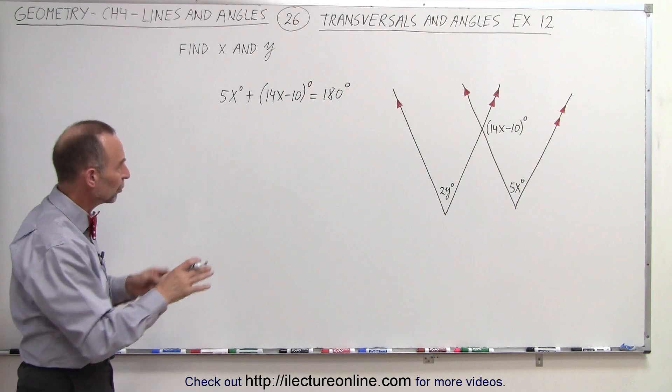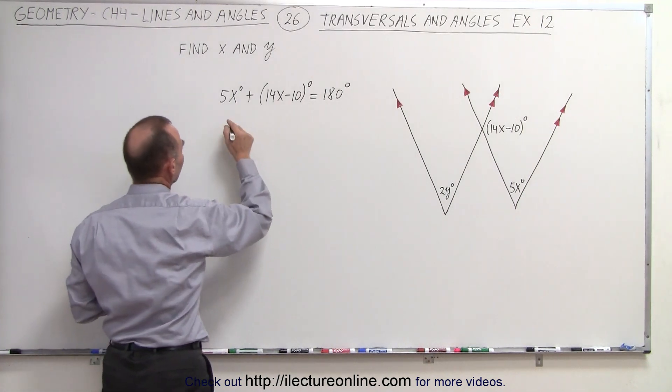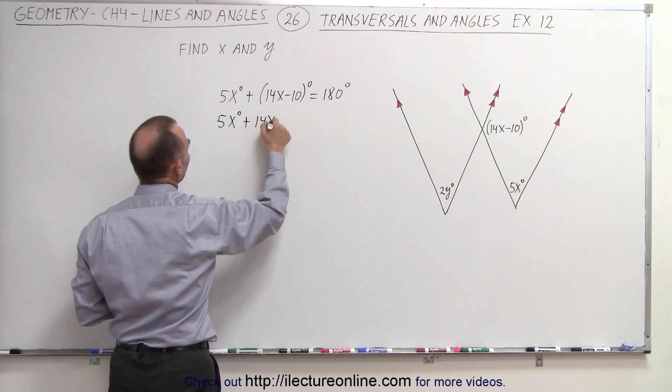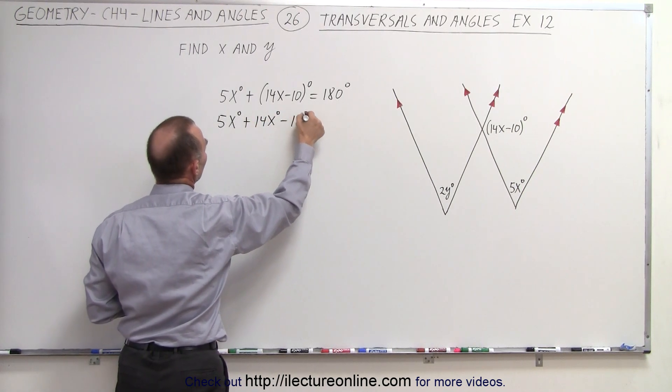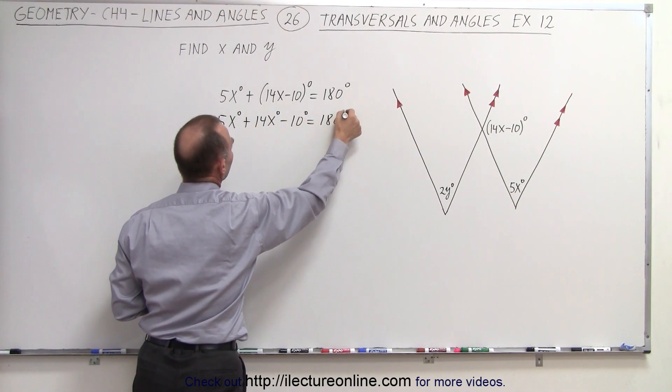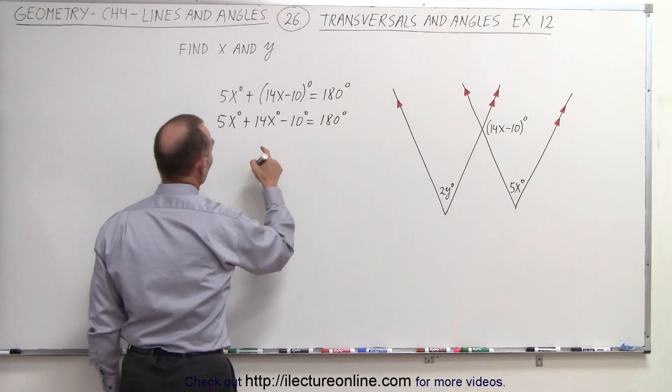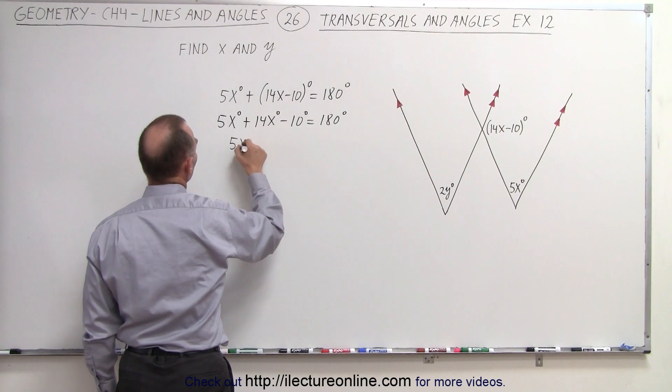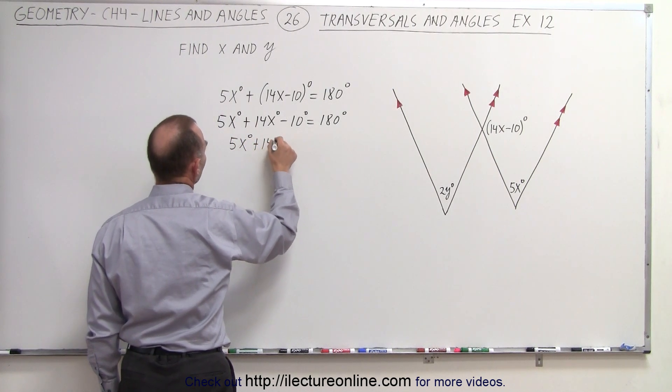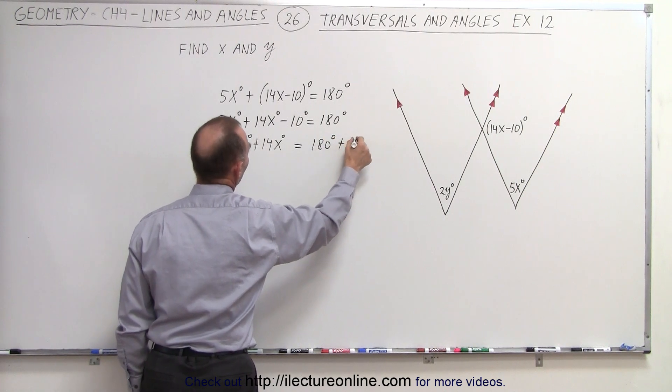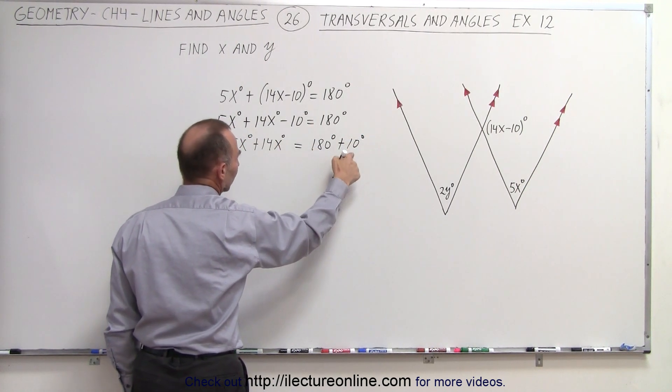So first what we're going to do is we're going to separate this. We're going to write this as 5x degrees plus 14x degrees minus 10 degrees equals 180 degrees. Now we add 10 degrees to both sides. So we have 5x degrees plus 14x degrees equals 180 degrees plus 10 degrees. By adding 10 to both sides, this disappears.